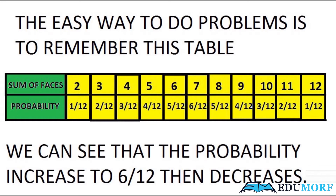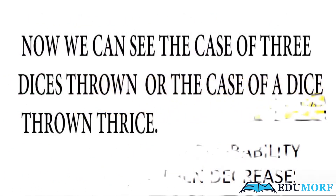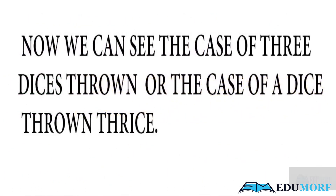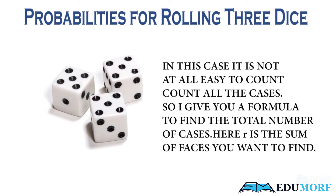Now we will move to the case where three dice are thrown simultaneously, or one dice being thrown thrice. In this case, it is not at all easy to count all the cases, so here we give a formula to find the total number of cases. In this formula, r denotes the sum of faces you want to find.